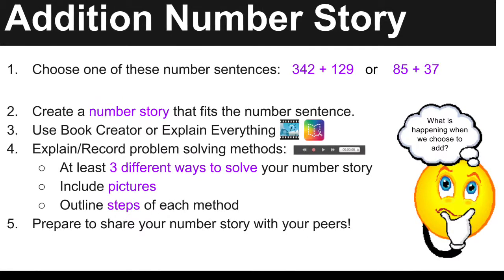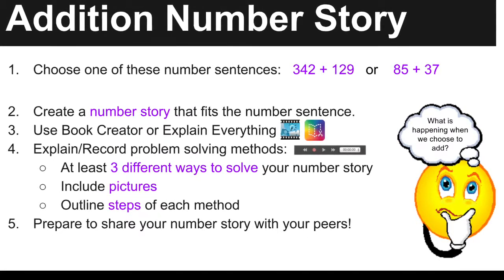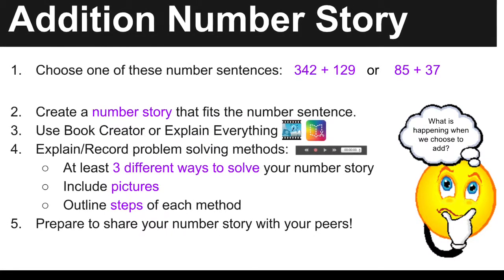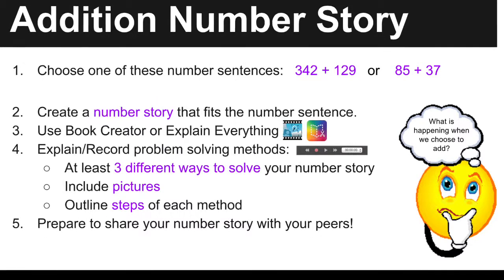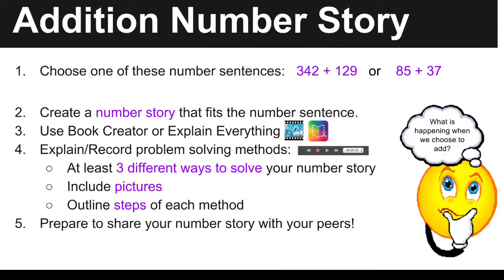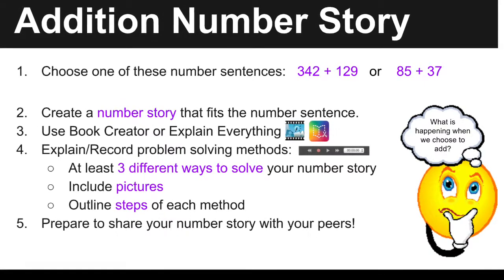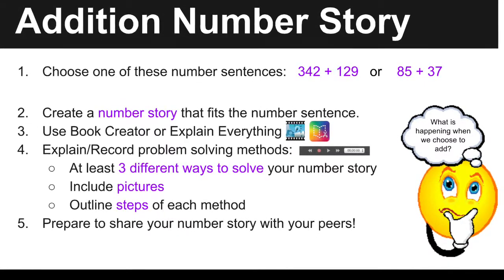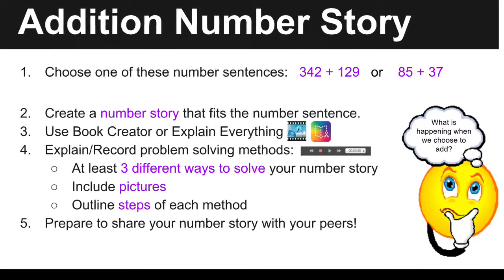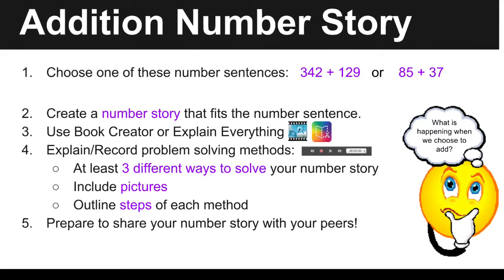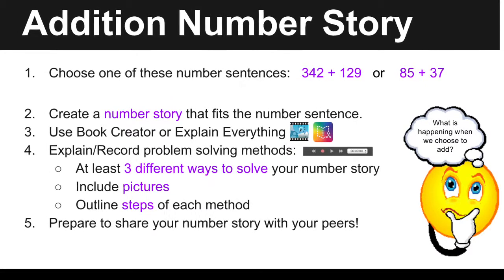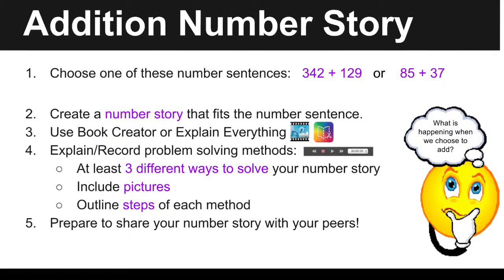The addition number story task is moving into OA learning targets. The first step is for students to choose one of these number sentences: 342 plus 129 or 85 plus 37, depending on the child's readiness level. The next step is to create a number story that fits the number sentence they chose. Using Book Creator or Explain Everything, they need to write down that number story, explain and record the problem-solving methods to solve it at least three different ways, and include pictures and outline the steps of each method.